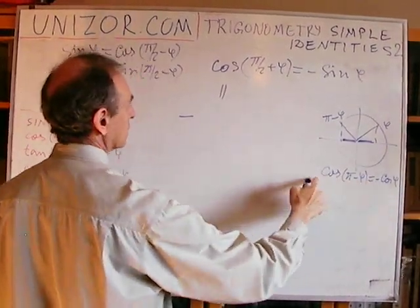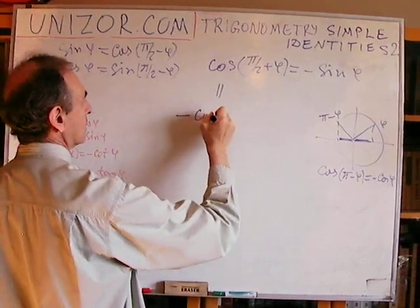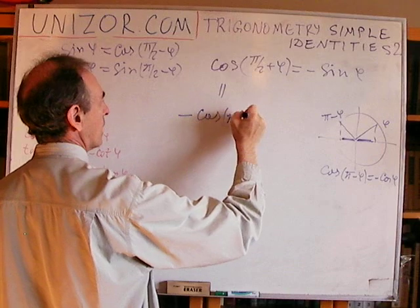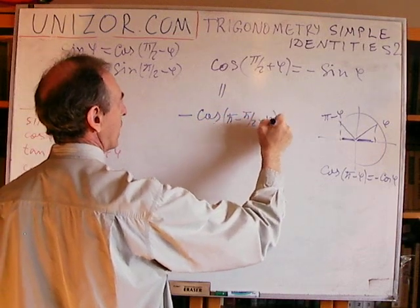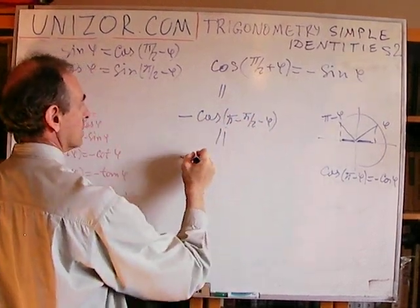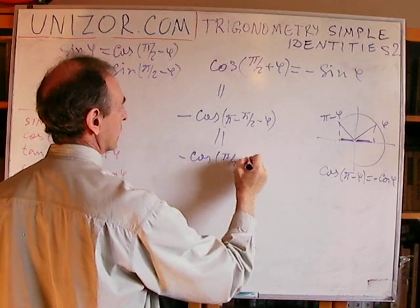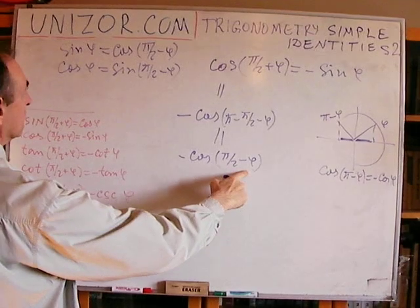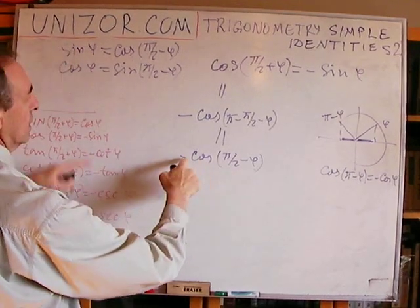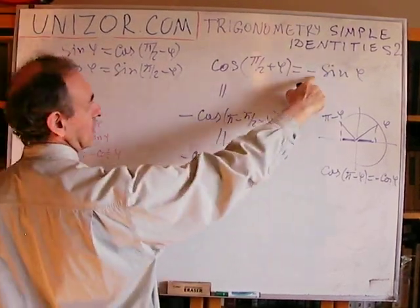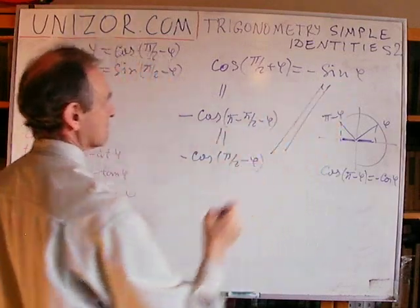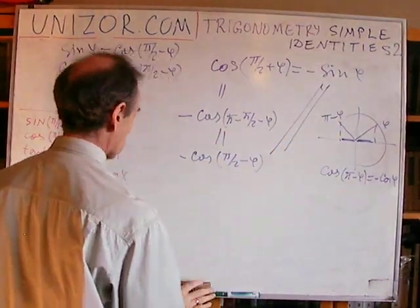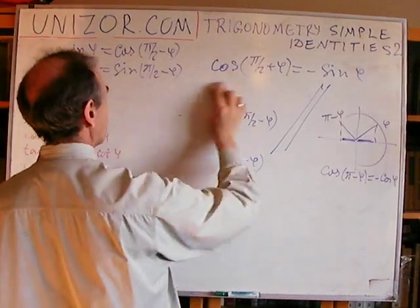Cosine of phi minus this, which is phi minus phi over 2 minus phi equals minus cosine of phi over 2 minus phi. Now, cosine of phi over 2 minus phi is equal to sine. Now we have a minus sine, and that's what it is. That's equal. So I'm using exactly the same trick, and I'll use it in other cases as well.